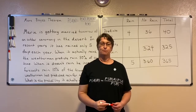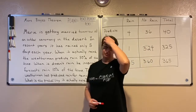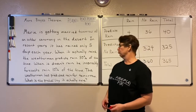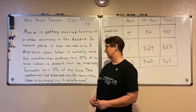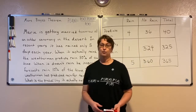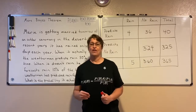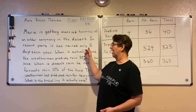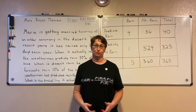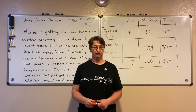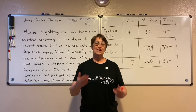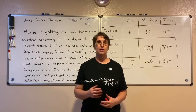In this video, we're going to use Bayes' theorem to help us determine another probability. Marie is getting married tomorrow at an outdoor ceremony in the desert. In recent years, it's rained only five days each year. When it actually rains, the weatherman predicts rain 80% of the time. When it doesn't rain, he incorrectly forecasts rain 10% of the time. The weatherman has predicted rain for tomorrow, and Marie wants to know what's the probability it actually rains. Before we know the weatherman's prediction, the probability it rains is five out of 365. But now we have new information, so we can update our probability — that's what Bayes' theorem is all about.